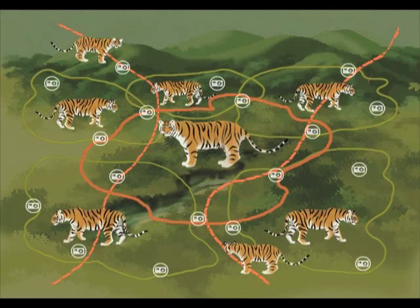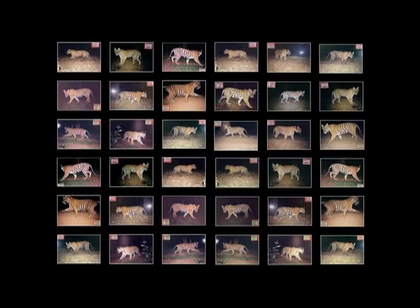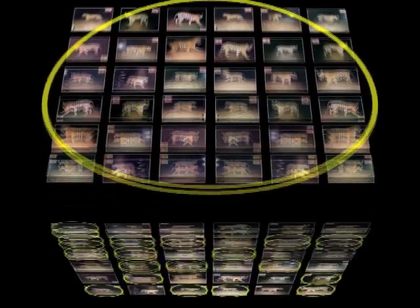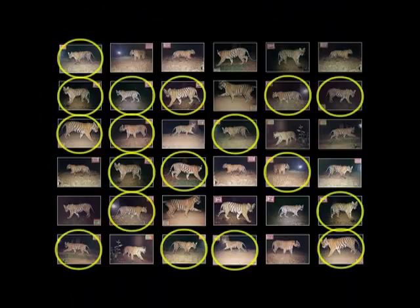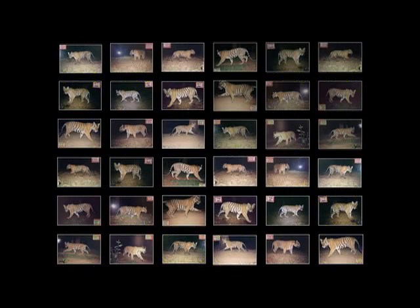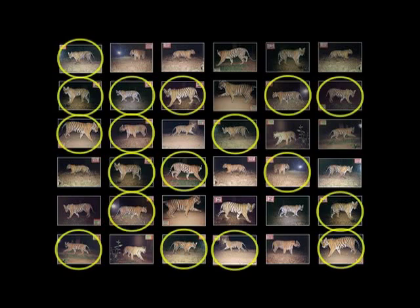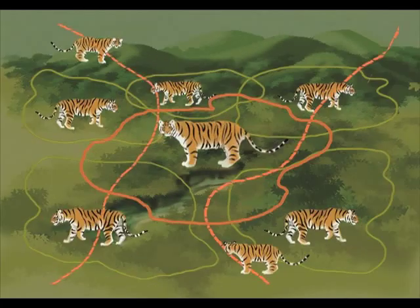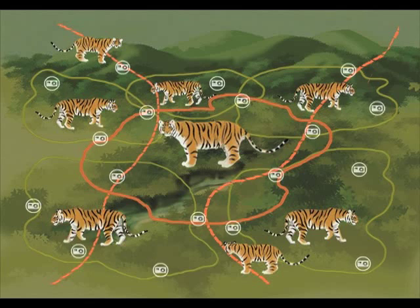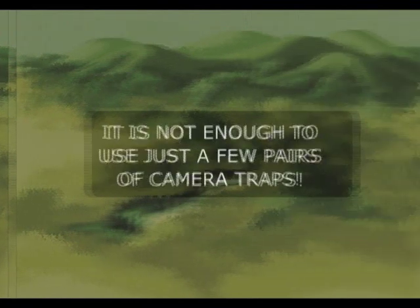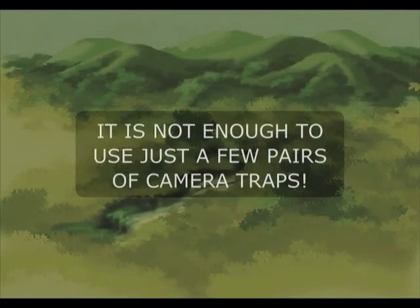Point number three: the goal should be to catch as many individuals as possible in each sample, and to recapture as many of the same tigers as possible in subsequent samples. In order to ensure this, a large number of camera traps should be spread out sufficiently and in numerous locations. It is not enough to use just a few pairs of camera traps.